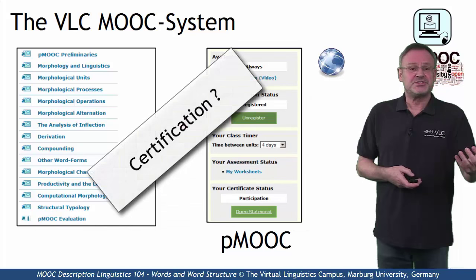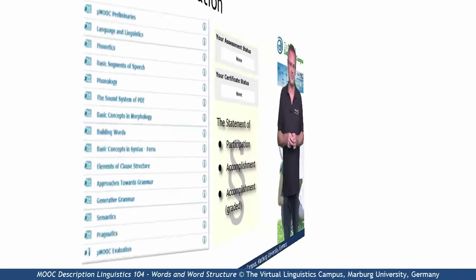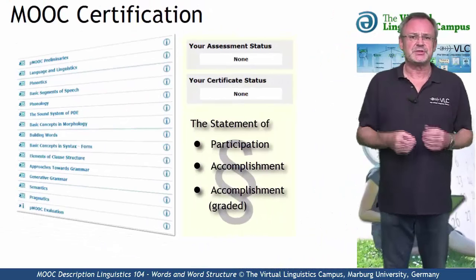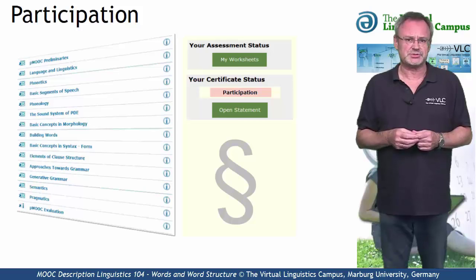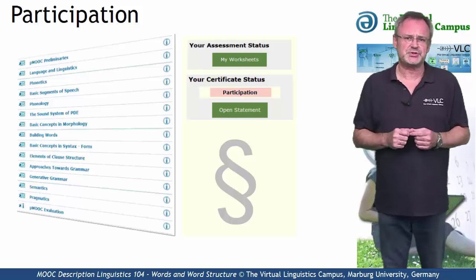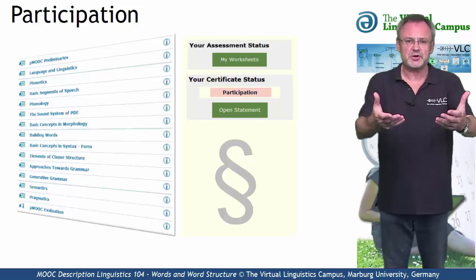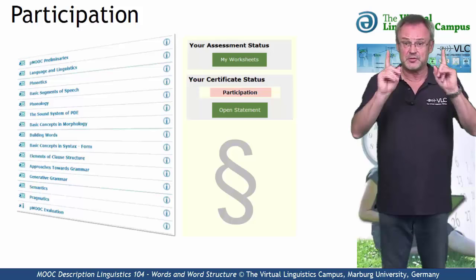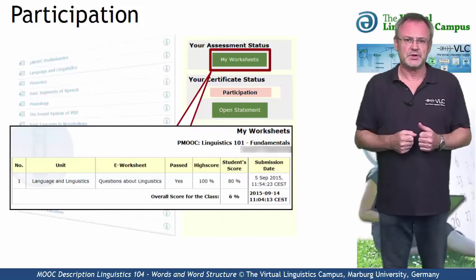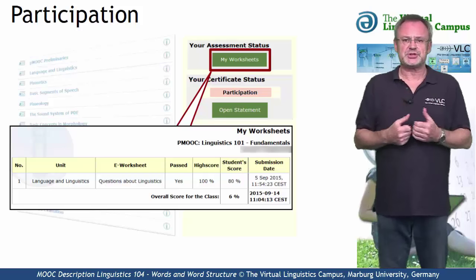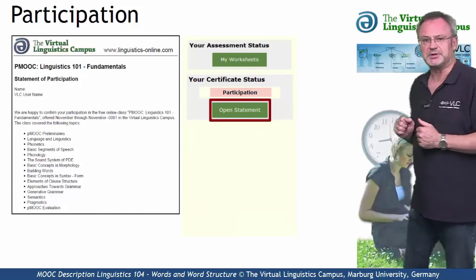And if you want a certificate? Here are our options. The simplest option is the Statement of Participation, issued by the Virtual Linguistics Campus. You will receive such a certificate for regular and active participation, including the submission of at least one worksheet, and for free. Once you have successfully submitted a worksheet, you will be eligible for such a certificate and can open it by hitting the Open Statement button.